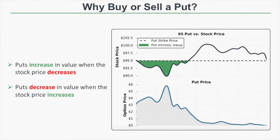Unlike call options, put options increase in value when the stock price falls and decrease in value when the stock price rises. Looking at a put option with a strike price of 95, the put has the ability to sell 100 shares for $95 per share if exercised. As the stock price falls from 95 to 90, the put's price increases because it can sell shares at a higher price than what they're currently trading for. If the stock is at $92.50, the 95 put has value because the holder can sell shares $2.50 above market. If shares drop to $90, the put buyer can sell shares $5 above market, making it even more valuable.